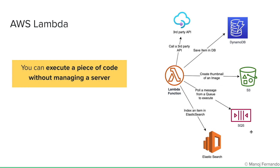Here's another example. Let's say that you have a queue — in this case, SQS or Simple Queue Service from AWS. Whenever an item is added to the queue, you can write a Lambda function to pull these messages or items from the queue and then execute.